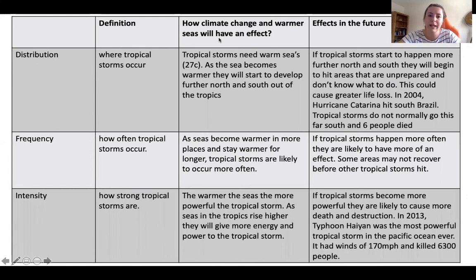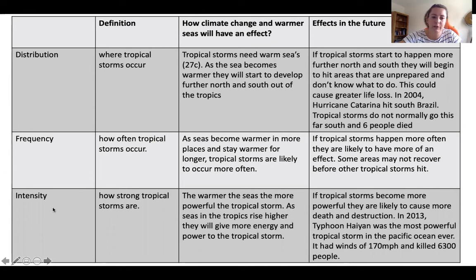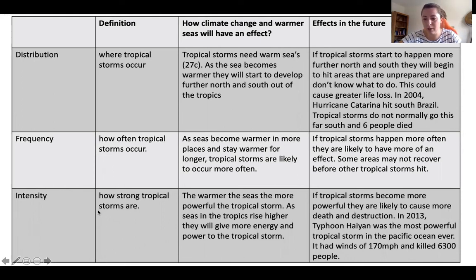This section looks at how climate change will affect tropical storms in the future. This was one of the first home learning tasks. You have a table looking at distribution, frequency, and intensity. If you don't have it, you can print-screen, print it off, or draw out the table and copy it. It's looking at how tropical storms will change in distribution, frequency, and intensity if the Earth gets warmer.